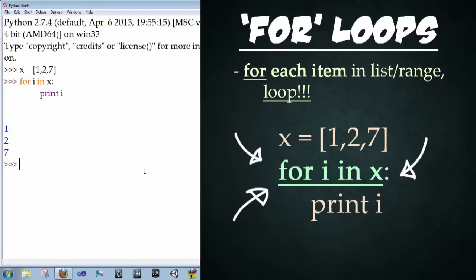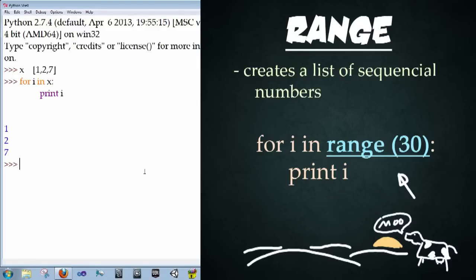Let's combine the power of a for loop with a range. A range is a keyword function that creates a sequence of numbers. By default, it goes from zero up to, but not including the last value you put in. So let's type in for i in range, open parentheses, 30, close parentheses,